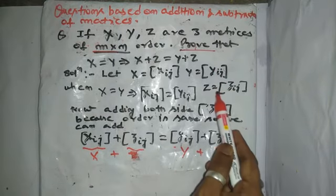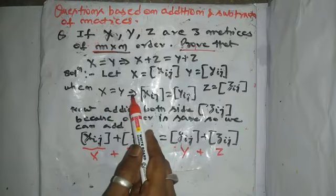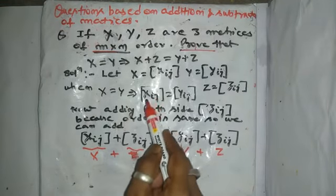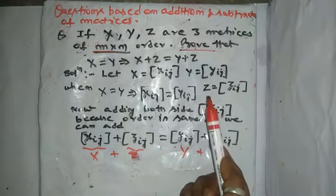I am assuming that X is defined by its element Xij and Y is defined by its element Yij. Now, Z is also defined by its element Zij. Now, when X is equal to Y, we can write Xij is equal to Yij.